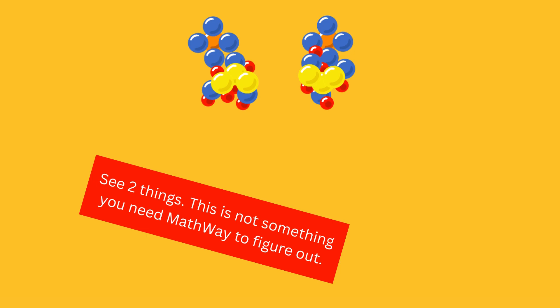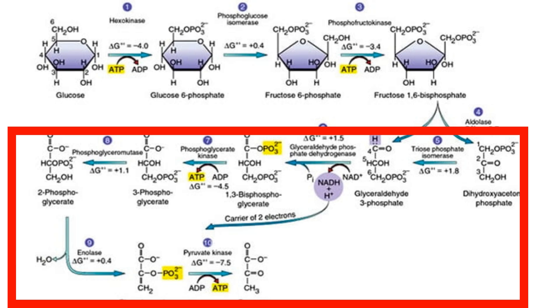This is because when our fructose-1,6-biphosphate split in half, it formed two dihydroxyacetone phosphates, so steps 5 to 10 happened twice, therefore producing 2 more ATP to get a net gain of 2 ATP.